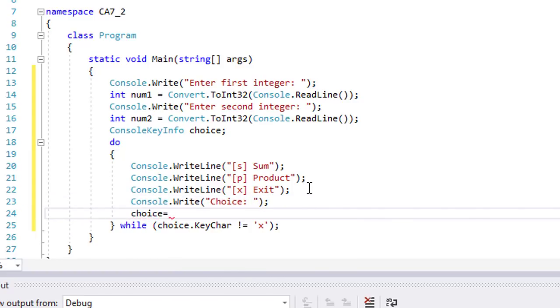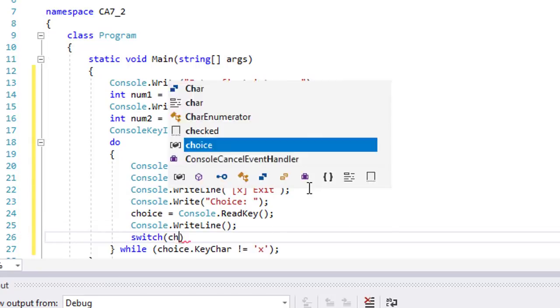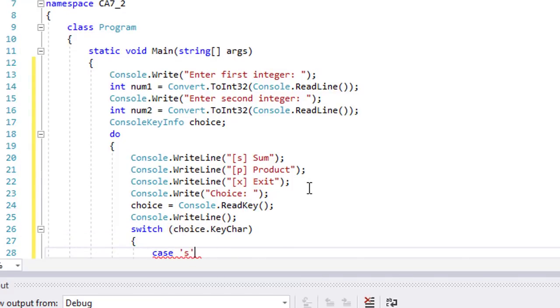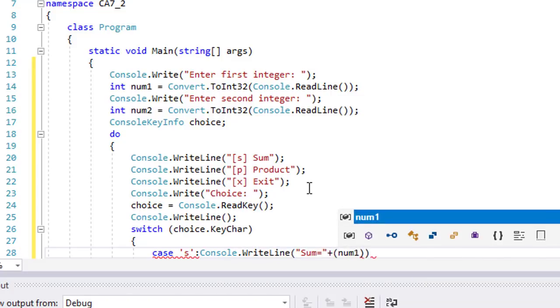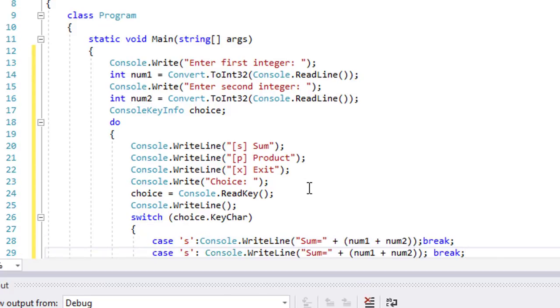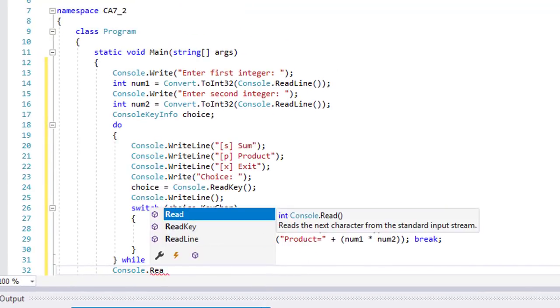To distinguish between S and P, we can use if statements or switch statement. I prefer switch statement for now. That's it. It will only stop after an x is chosen.